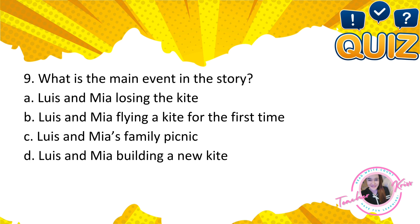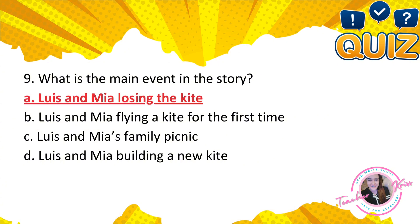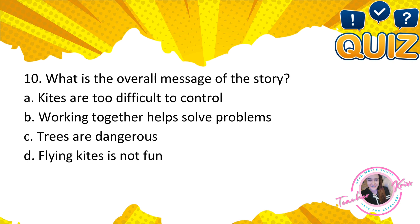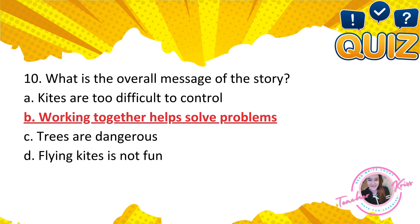Number 9: What is the main event in the story? A. Luis and Mia losing the kite, B. Luis and Mia flying a kite for the first time, C. Luis and Mia's family picnic, D. Luis and Mia building a new kite. The correct answer is letter A — Luis and Mia losing the kite. Number 10: What is the overall message of the story? A. Kites are too difficult to control, B. Working together helps solve problems, C. Trees are dangerous, D. Flying kites is not fun. The correct answer is letter B — working together helps solve problems.